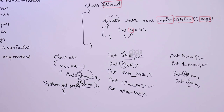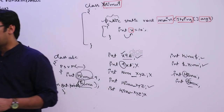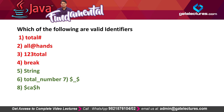I am writing some names on screen - tell me which of the following are valid identifiers: 'total#', 'all@hands', '123xyz', 'break', 'String', 'total number', '$_$', '$', '_caDollarh'. As you can see, I have already marked on screen which are valid and which are not valid.